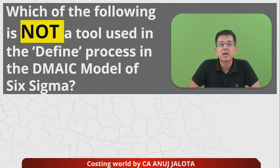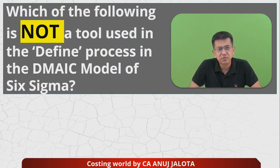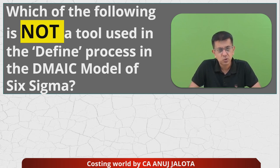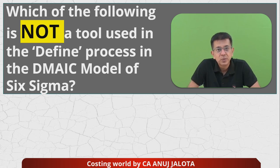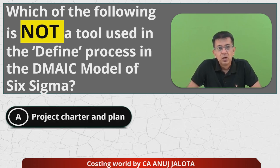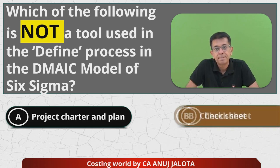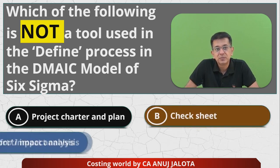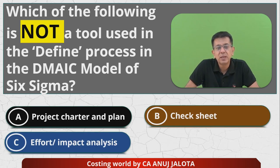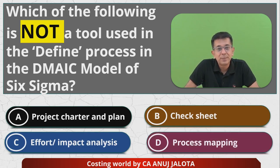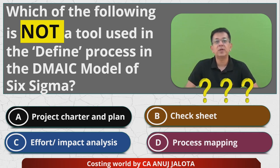Which of the following is NOT a tool used in the defining process of the DMAIC model of Six Sigma? DMAIC stands for Define, Measure, Analyze, Improve, and Control. The four options are: (1) Project Charter and Plan, (2) Check Sheet, (3) Effort or Impact Analysis, and (4) Process Mapping. If you know the answer, comment right now.